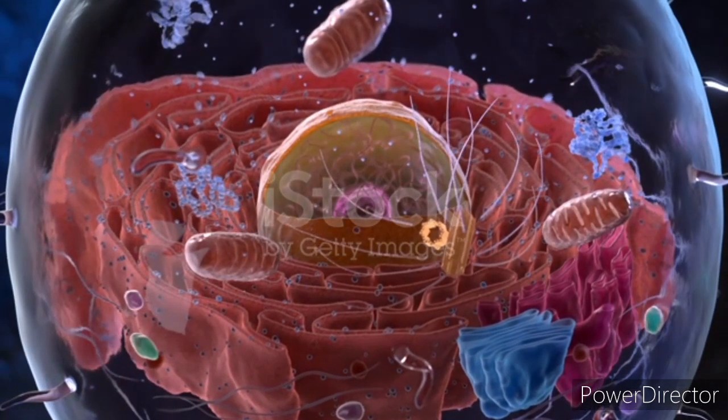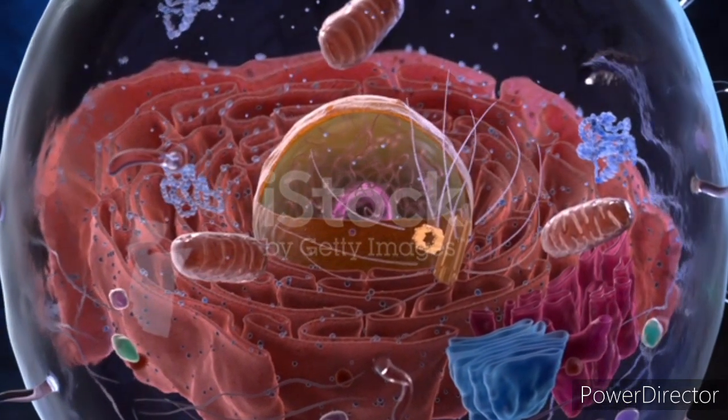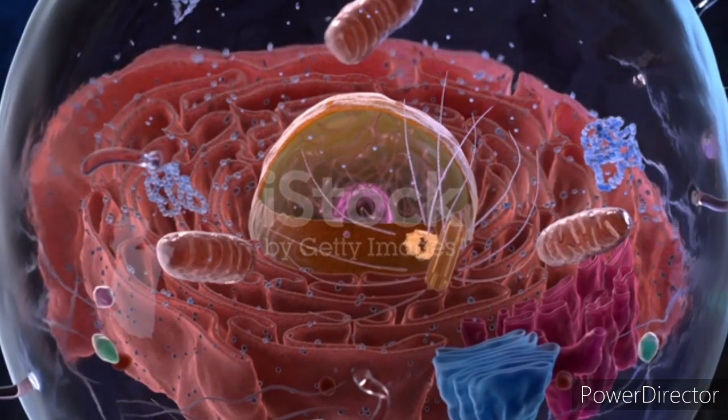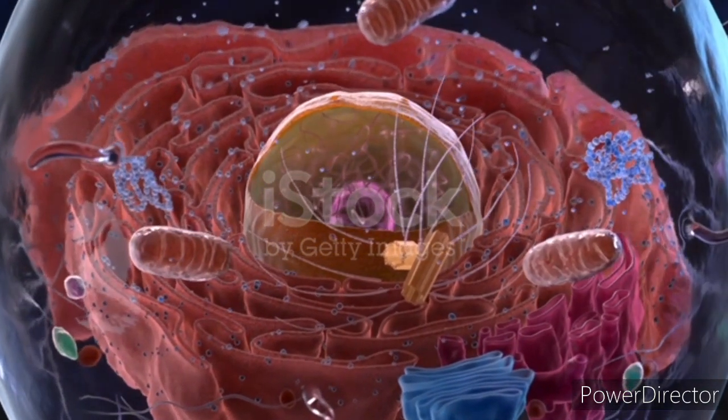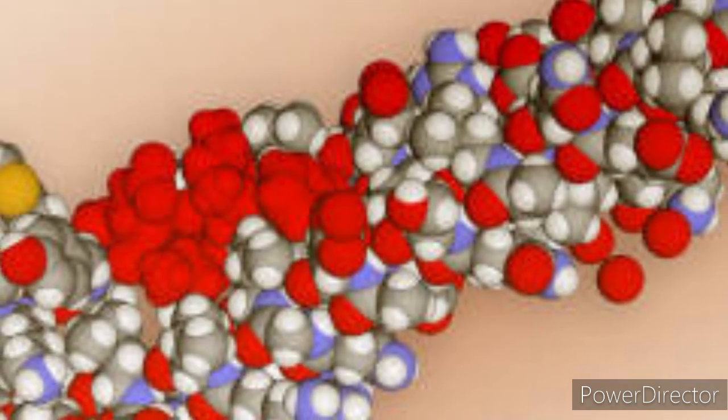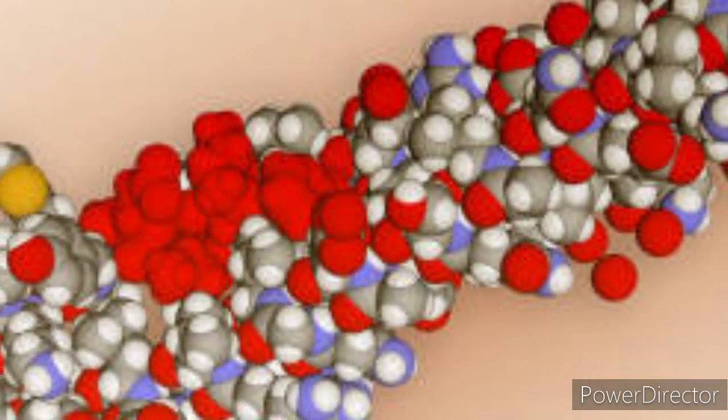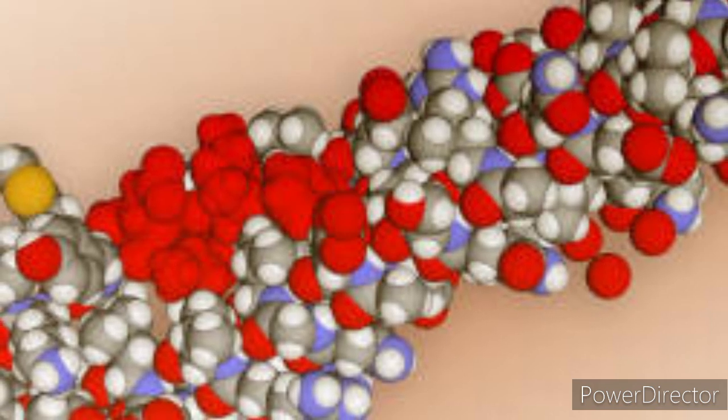There are three main types of filaments that compose the cytoskeleton. Microfilaments or actin filaments. These are the thinnest filaments made up of actin protein subunits.